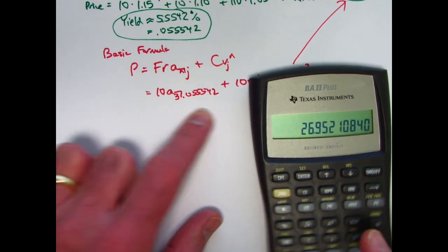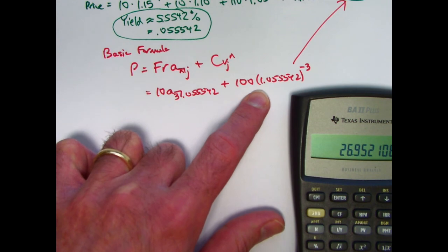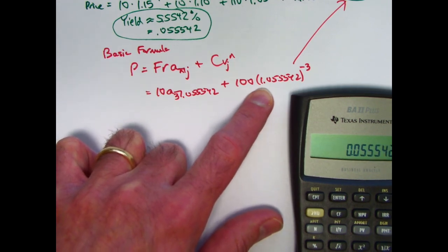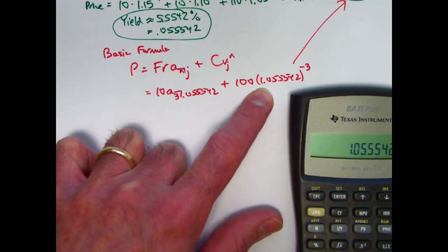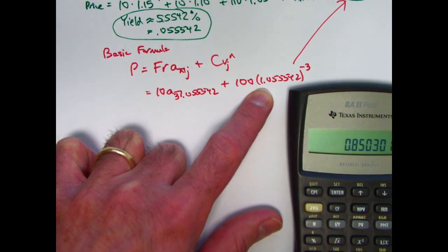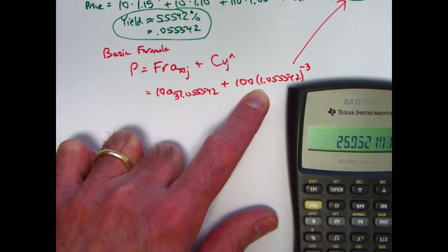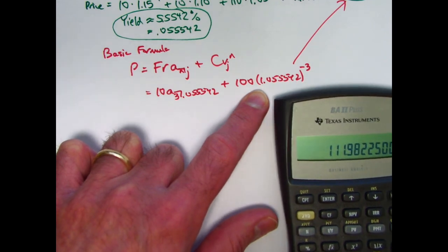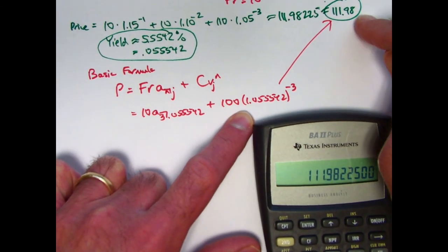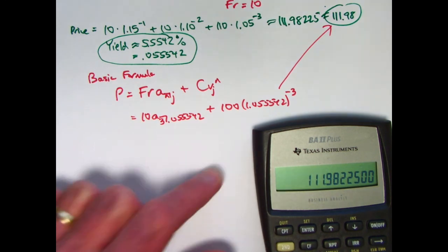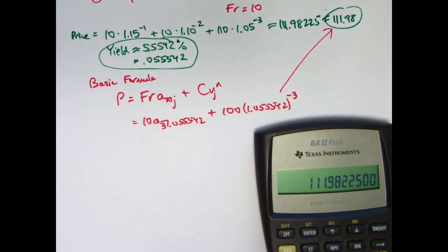And then take what's in register zero, add 1 to it, raise to the negative 3 power, times 100. Add what's in register 1. And we do indeed get 111.98. Same answer. Okay, so that's satisfying to see that we get the same answer, and it allowed us to review the basic formula for a bond price.